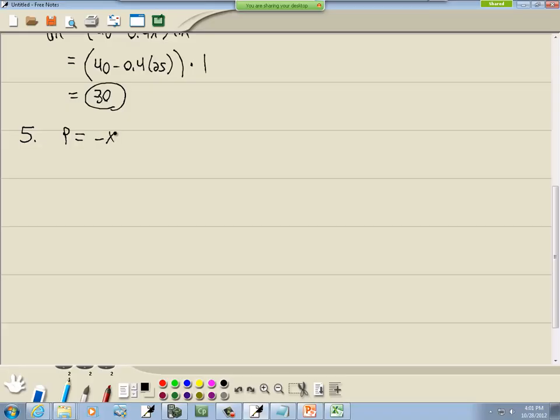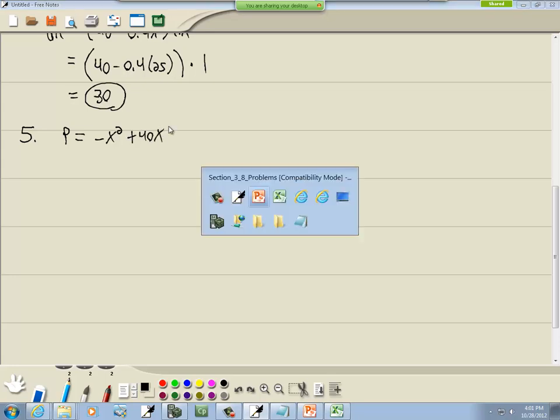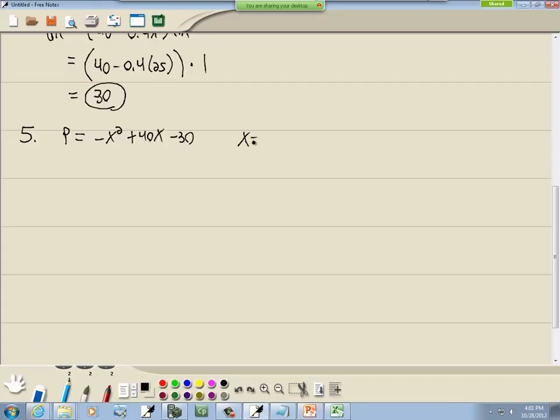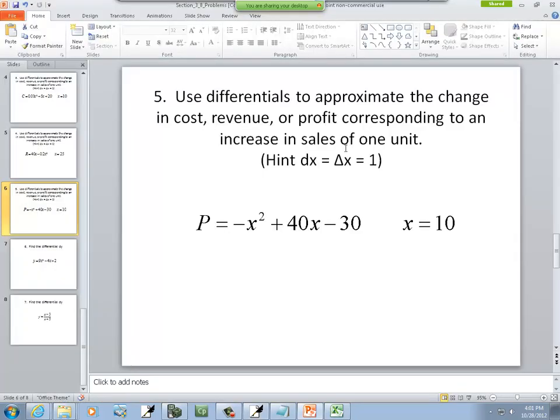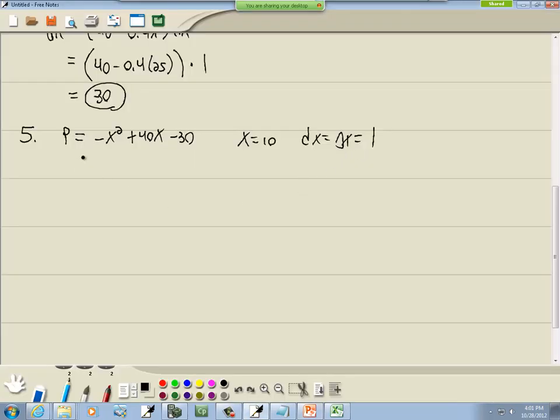P is equal to negative x squared plus 40x minus 30, and x is 10, and dx equals delta x equals 1. Now again realize that what we're saying here is we're predicting what the rate of change is going to be for the x. We're saying we want to change by selling one more unit. I take the derivative dP over dx is equal to negative 2x plus 40. Multiply both sides by dx so we've got negative 2x plus 40 times dx, times 1, which would give us 20.